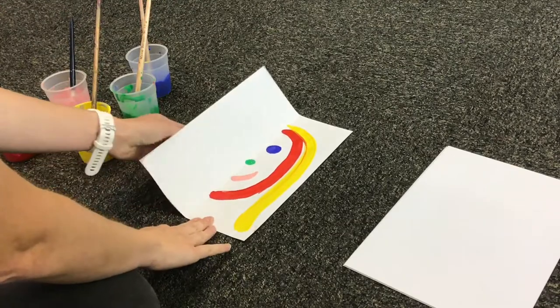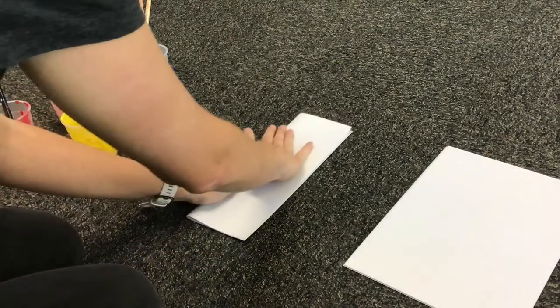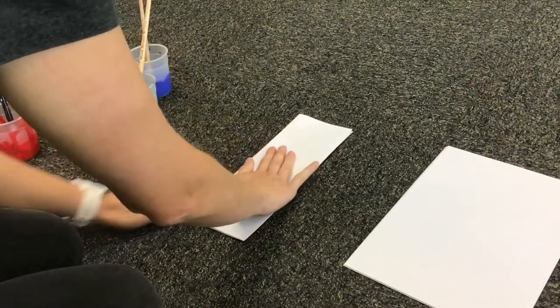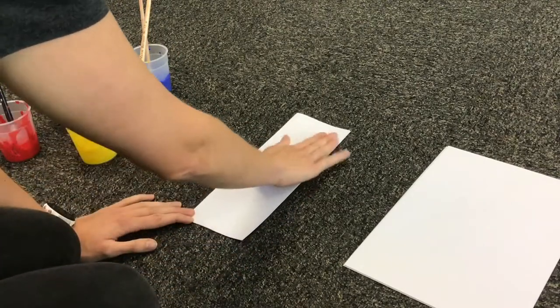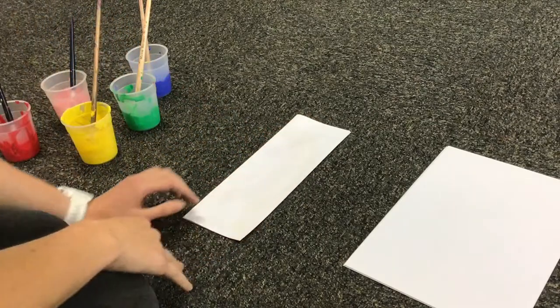Once you've finished painting the first half of your face, fold the paper back along the crease and press down lightly like I am doing. When you have finished pressing down, open it up again to reveal your completed picture.